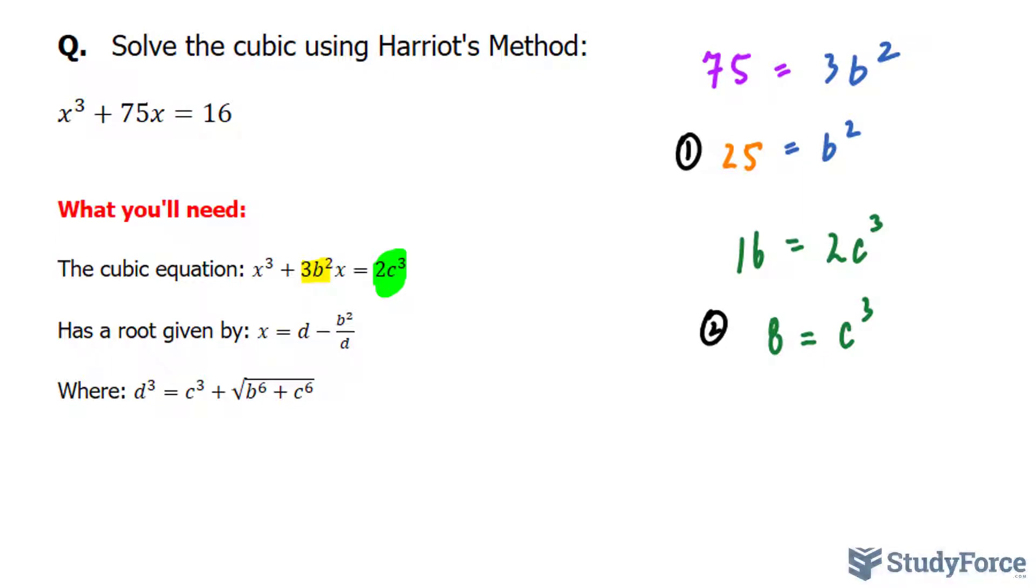Now I can start to find out information about d, which eventually I'll use to find my root. d is found using this formula, where I have d³ = c³, and that's 8, we found that earlier, plus the square root of b⁶ + c⁶. We can get b⁶ by manipulating equation number 1, this one over here, where I raise both sides to the power of 3. And the exponent laws makes this b⁶, therefore 25³ is b⁶.